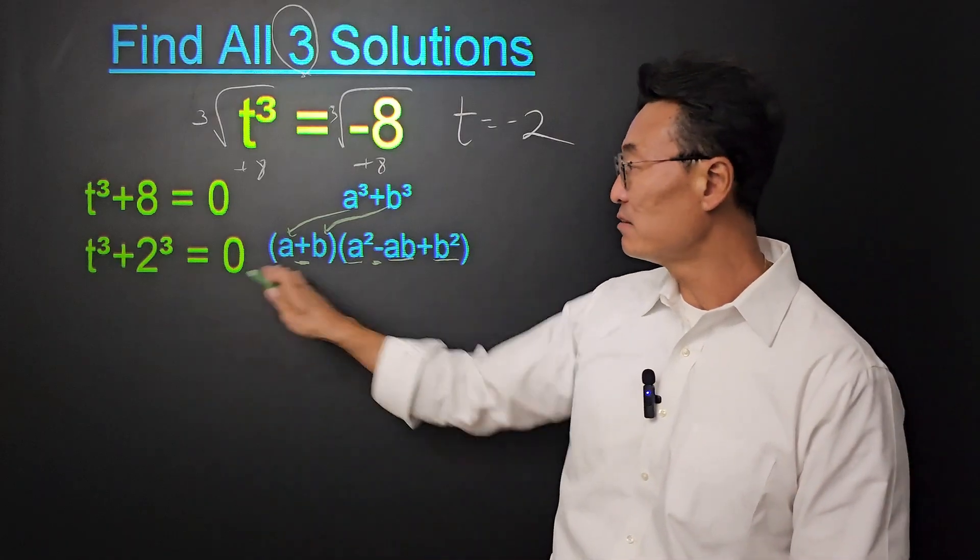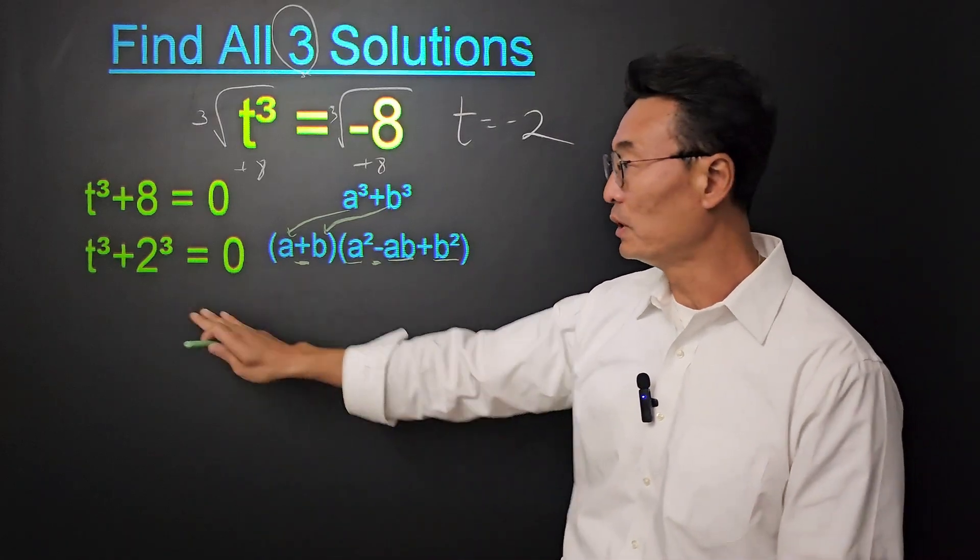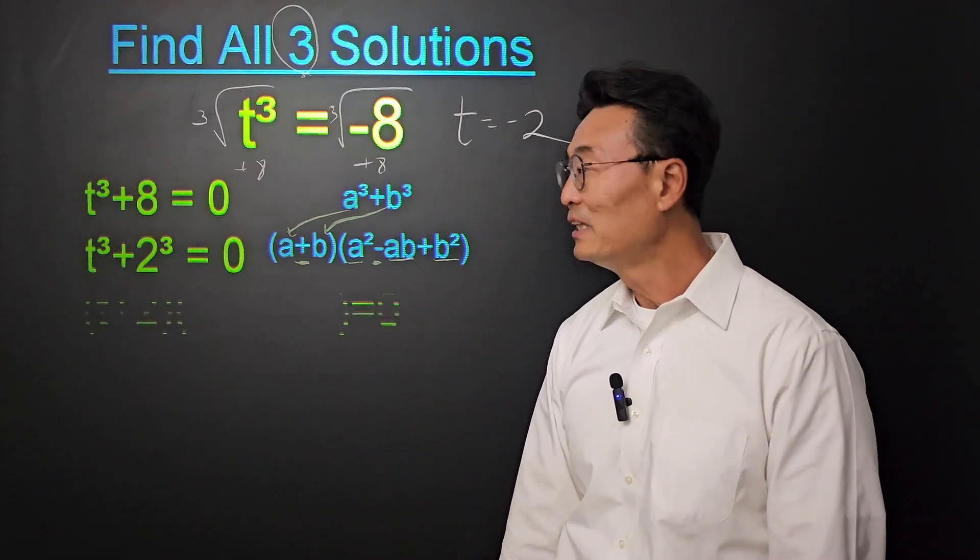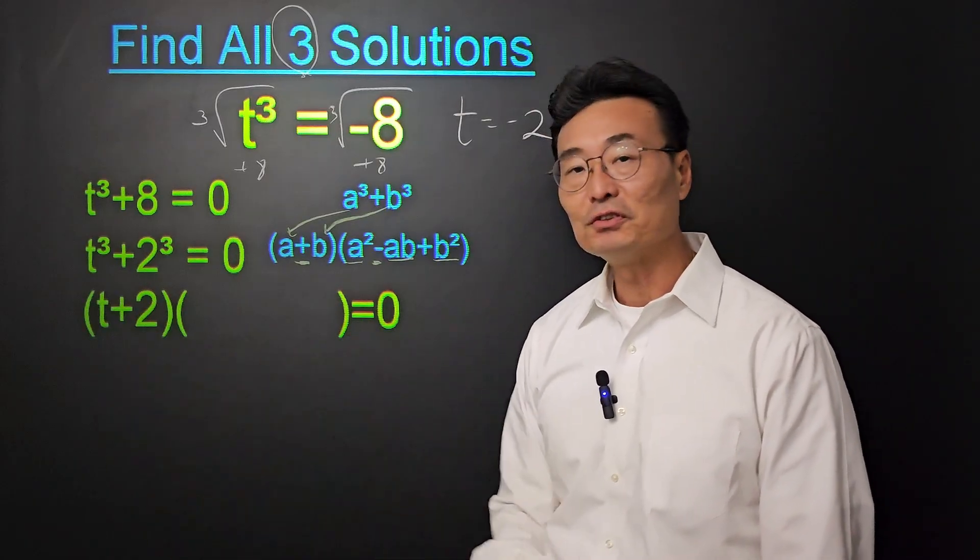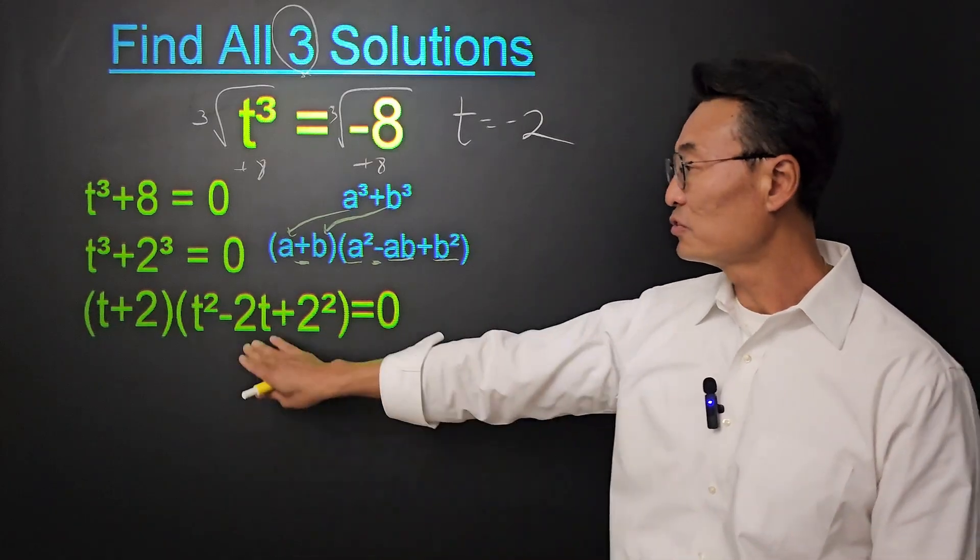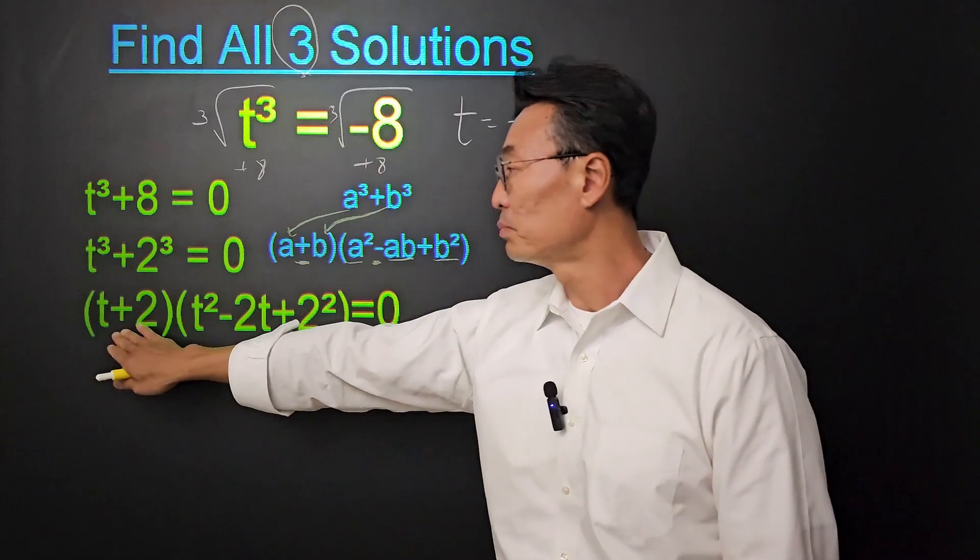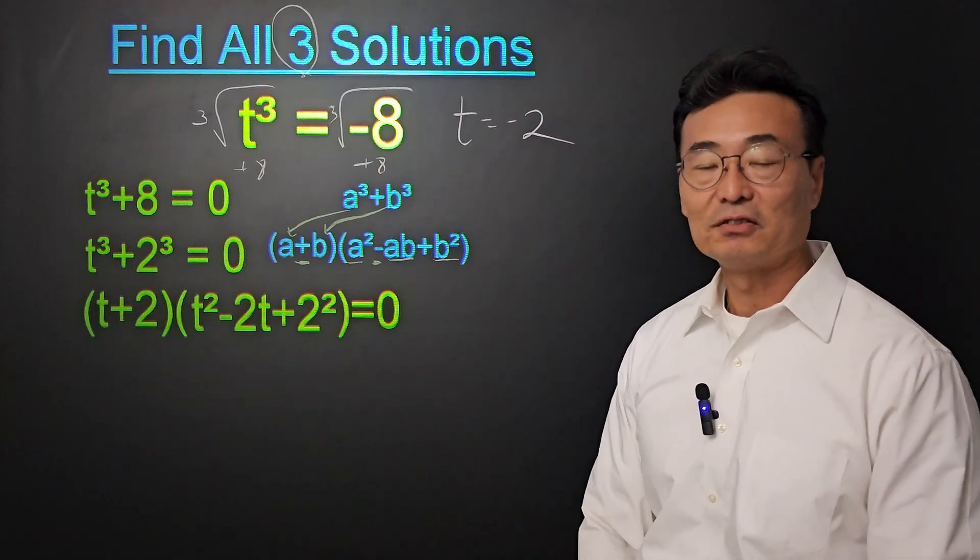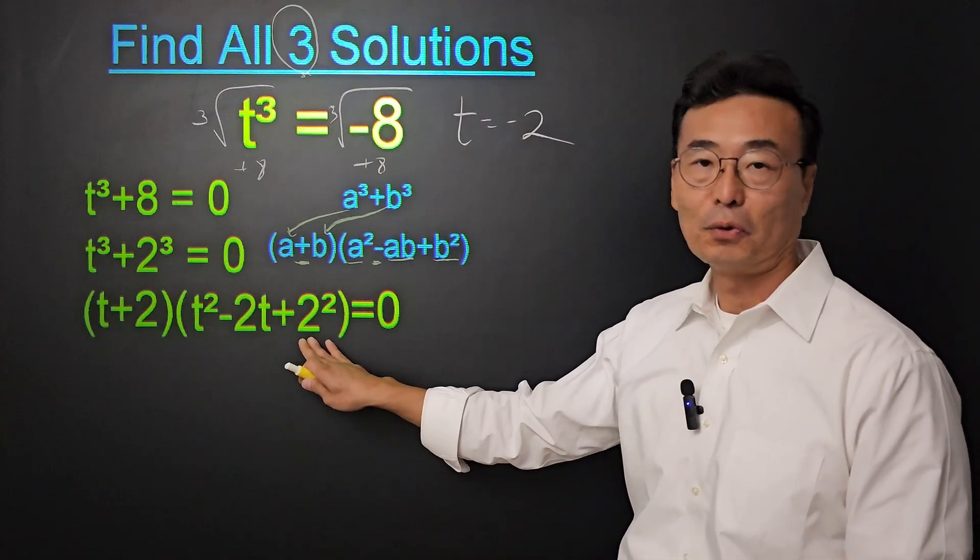So if we apply this formula, the sum of cube formula, to t cubed plus 2 cubed, then we get t plus 2 in the first set of parentheses. And then we get t squared minus 2t, notice the opposite sign, the plus in the front, minus in the back. And then of course we have the plus 2 squared, which is 4.